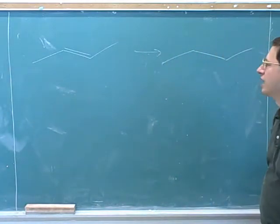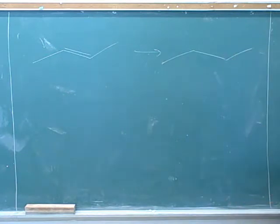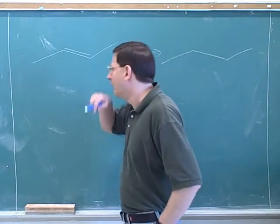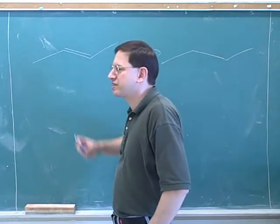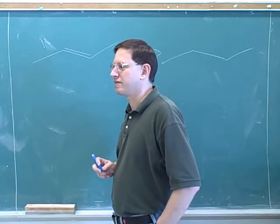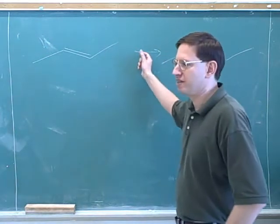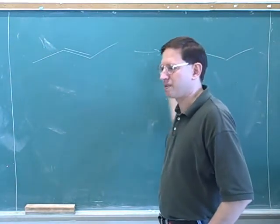Let's do a synthesis problem. Here's the starting material on the left and the product on the right. Your job is to come up with reagents to go from starting material to product. Now, double bonds are functional groups — even double bonds between two carbons. The arrow means starting material is on the left and product is on the right.